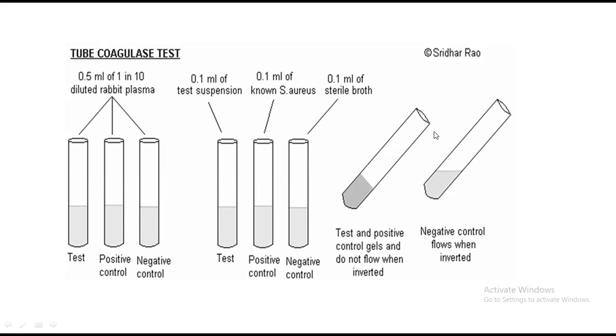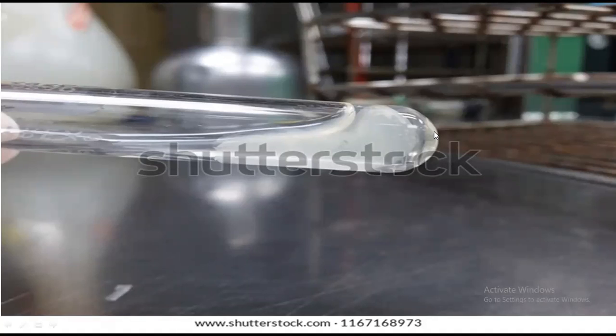To read results, invert the test tubes slightly. If the contents appear lumpy with small dots, coagulation has occurred. If the liquid moves freely, there is no coagulation. You can also detect turbidity — if the tube is turbid, there is growth/coagulation; if not turbid, the liquid moves freely. The best method is to invert the test tubes and observe mobility: highly mobile means no clumping and coagulation negative; clumping present means coagulation positive.